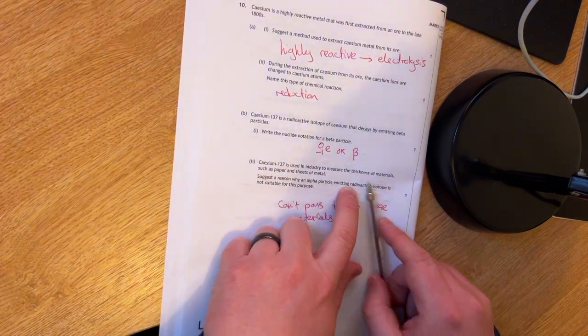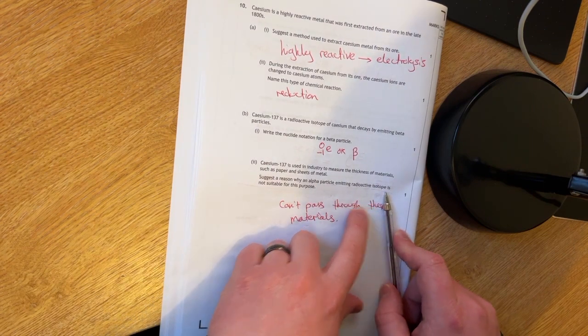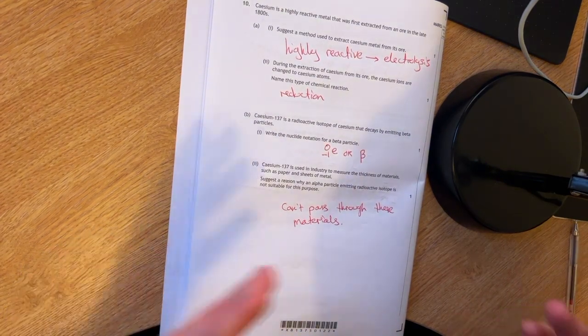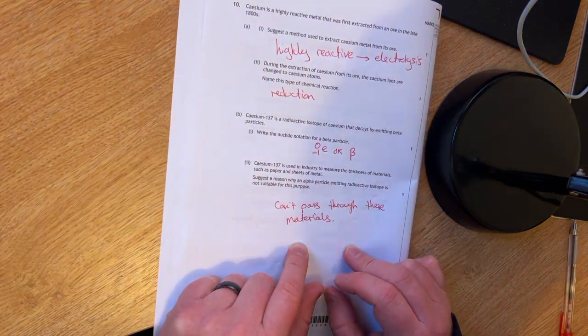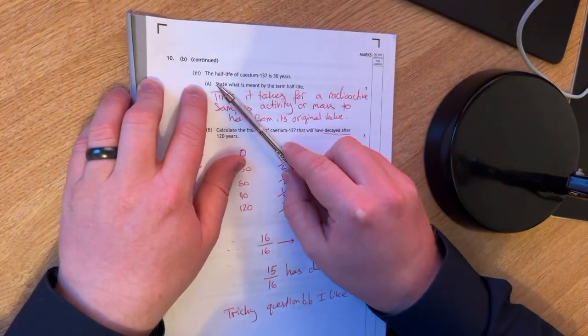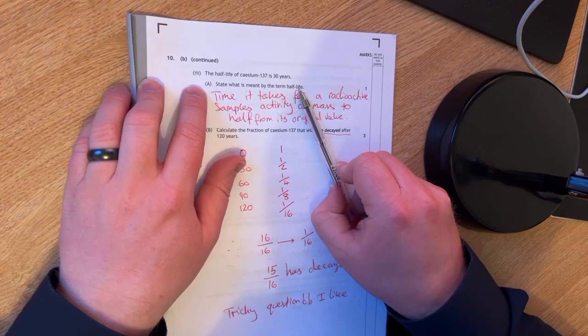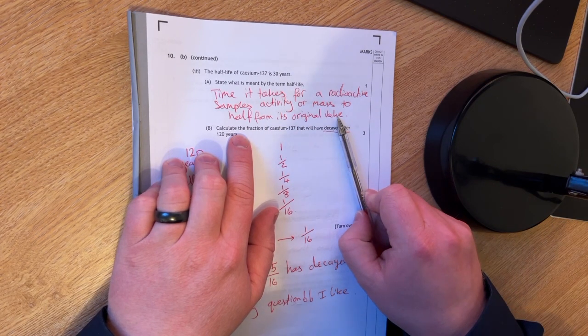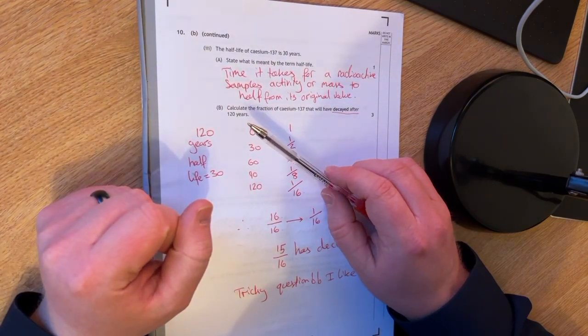You have to write the nuclear notation for a beta particle. You can either go for 0,-1 e or a beta symbol like that. Cesium 137 is used in industry to measure the thickness of materials such as paper and sheets of metal. Suggest a reason why an alpha particle emitting radioactive isotope is not suitable for this purpose. It can't pass through these materials. So therefore it's no use. The half-life of cesium 137 is 30 years. Say what is meant by the term half-life. It's the time it takes for a radioactive sample's activity or mass to half from its original value.